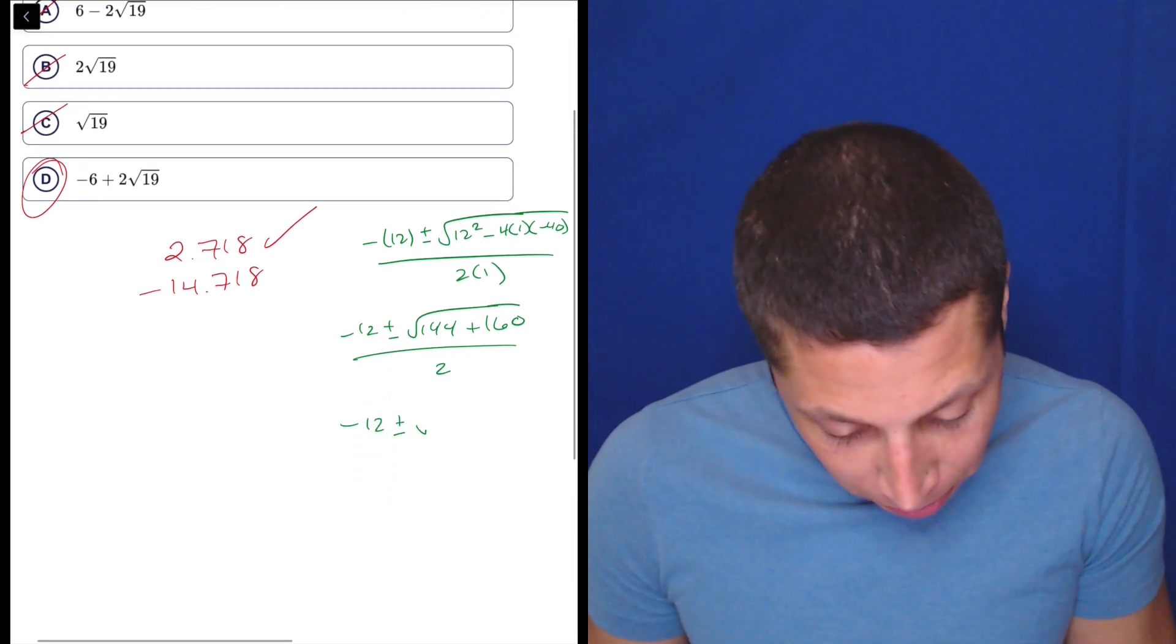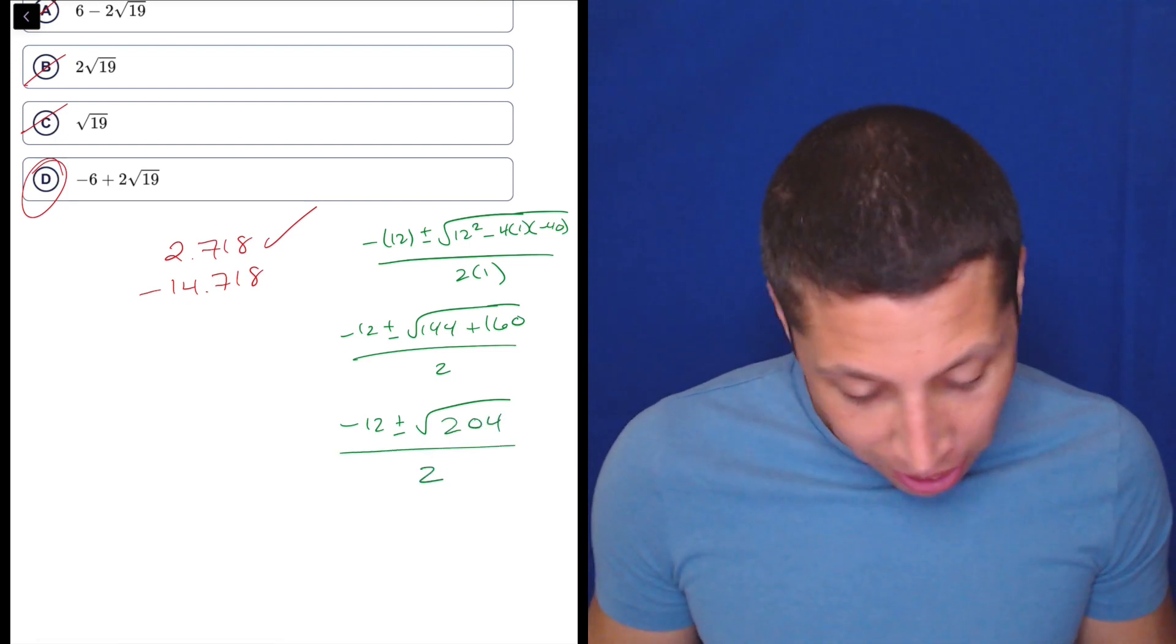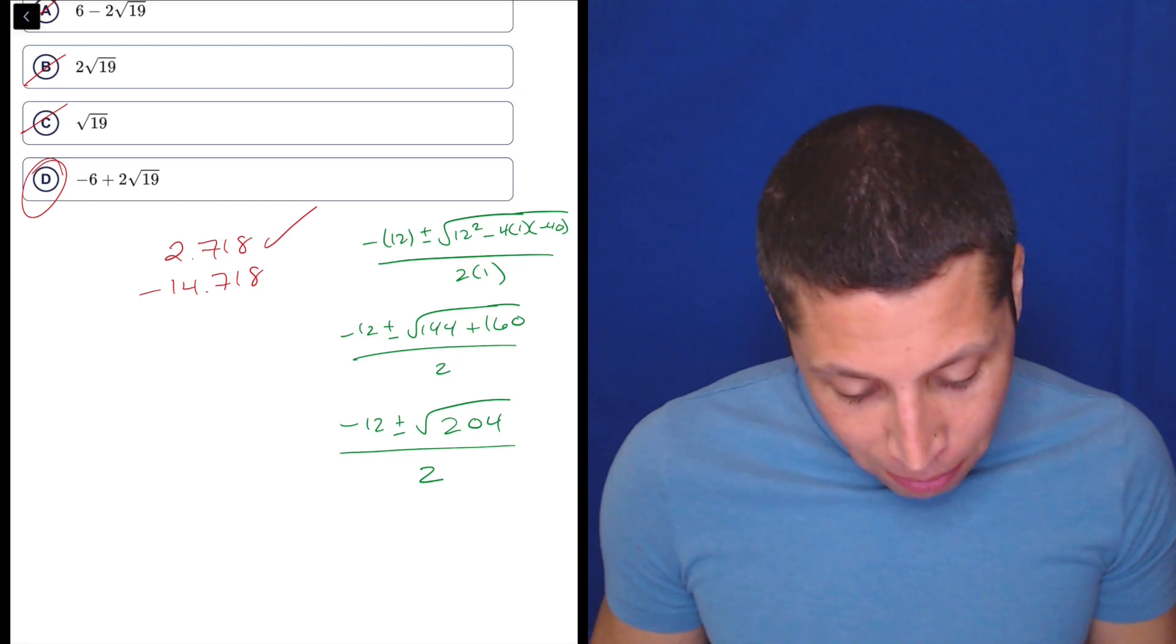So that's negative 12 plus or minus the square root of 144 plus 160 all over 2. So that's negative 12 plus or minus the square root of 204 all over 2. And now what? Now what do you do? Right?